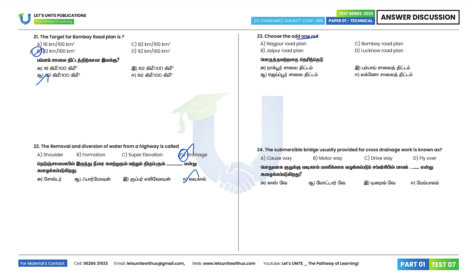23rd question: Choose the odd one out. Nagpur Road Plan is the First 20-Year Plan, Bombay is the Second 20-Year Plan, and the Third 20-Year Plan is Lucknow. So the Jaipur Road Plan is the odd one out. Option B is the correct answer.